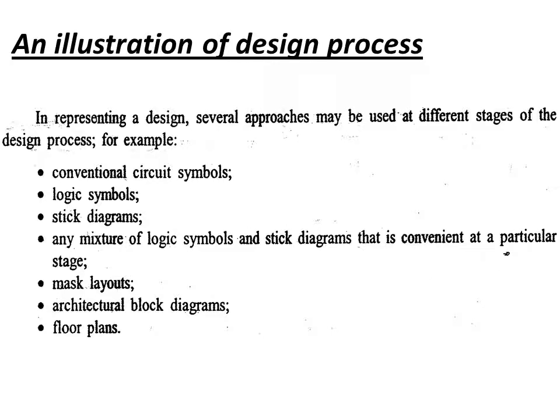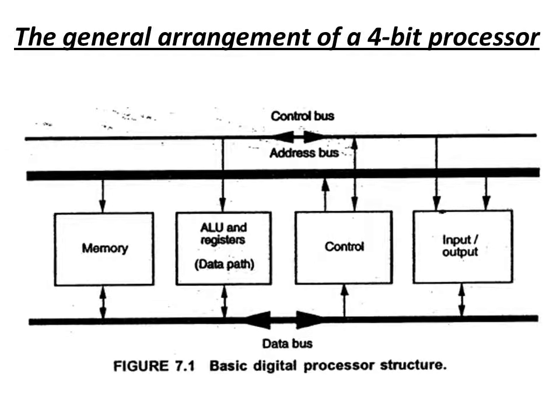Now let us look at an illustration of the design process. We can represent a design in a top-down manner through different stages of the design process: conventional circuit symbols, logic symbols, stick diagrams, or any mixture of logic symbols and stick diagrams, which is also convenient, and then mask layouts, or in terms of block diagrams and floor plans. These are the stages of the design process.